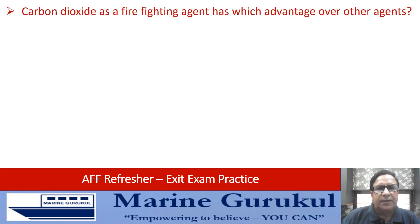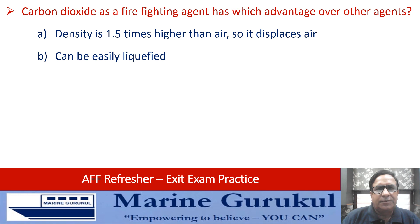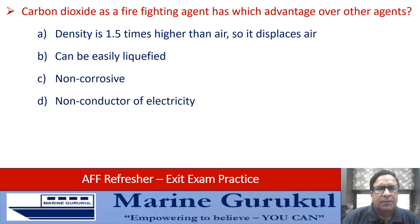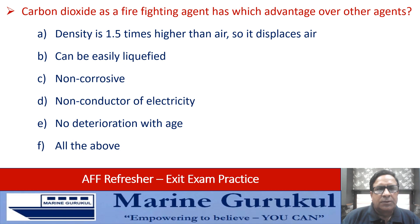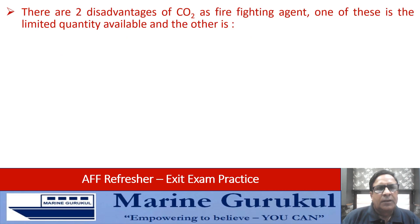Carbon dioxide as a firefighting agent has which advantage over other agents? Its density is 1.5 times higher than air so it displaces air, it can be easily liquefied, it is non-corrosive, a non-conductor of electricity, and has no deterioration with age. All of the above — so the answer is F, all of the above.